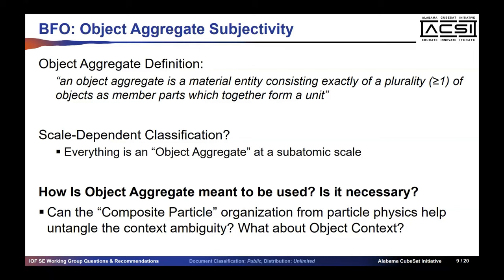Point taken. The problem I see with the compositional hierarchy existing near object aggregate is the material dependence — it goes back to material versus immaterial. Just as a set would be some generically dependent continuant under some information entity, a compositional hierarchy like a set does not necessarily have to be material. It may be under generically dependent continuant itself.